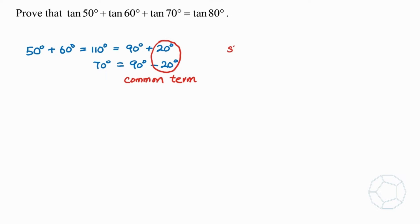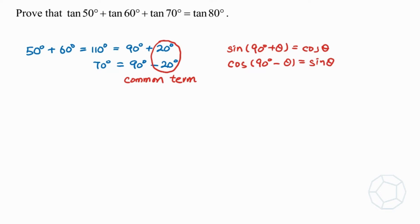For the first one, we'll have sine(90 degrees plus theta) is equal to cosine theta. And for the second one, we will have cosine(90 degrees minus theta) equals to sine theta. We'll apply these formulas in the proof later on. Next, for the common term 20 degrees, it can be written as 2 times 10 degrees.